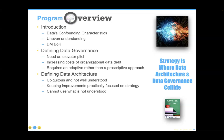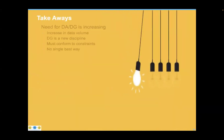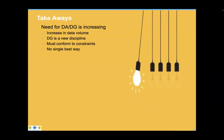A necessary but insufficient component of an architecture is a focus on strategy — faster, better, cheaper, or less risky must be there. We can't make use of what we don't understand. Strategic focus helps to improve both the focus of data governance and the goals of data architecture, upending the traditional approach. Think of it as a defensive driving exercise: we're trying to put skills in place that will continue throughout a lifetime. Storytelling around all of this is extremely helpful because it gets people to act.